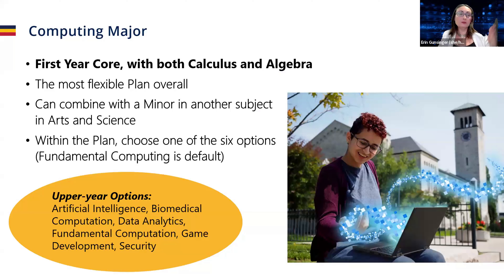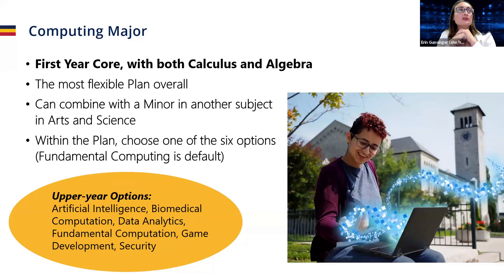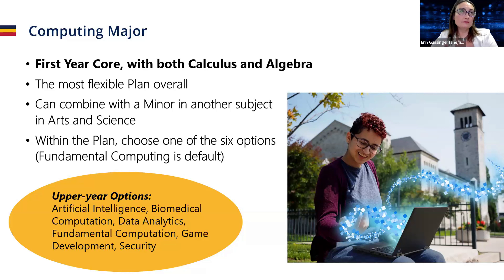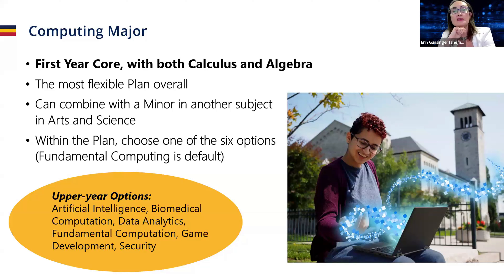We're going to talk about what courses you need for each plan. The computing major is probably one of our most popular plans — right up there with CSI. First year core courses are going to be CISC 121, 102, and 124, plus calculus and algebra courses. These are all outlined in the academic calendar and on our website.